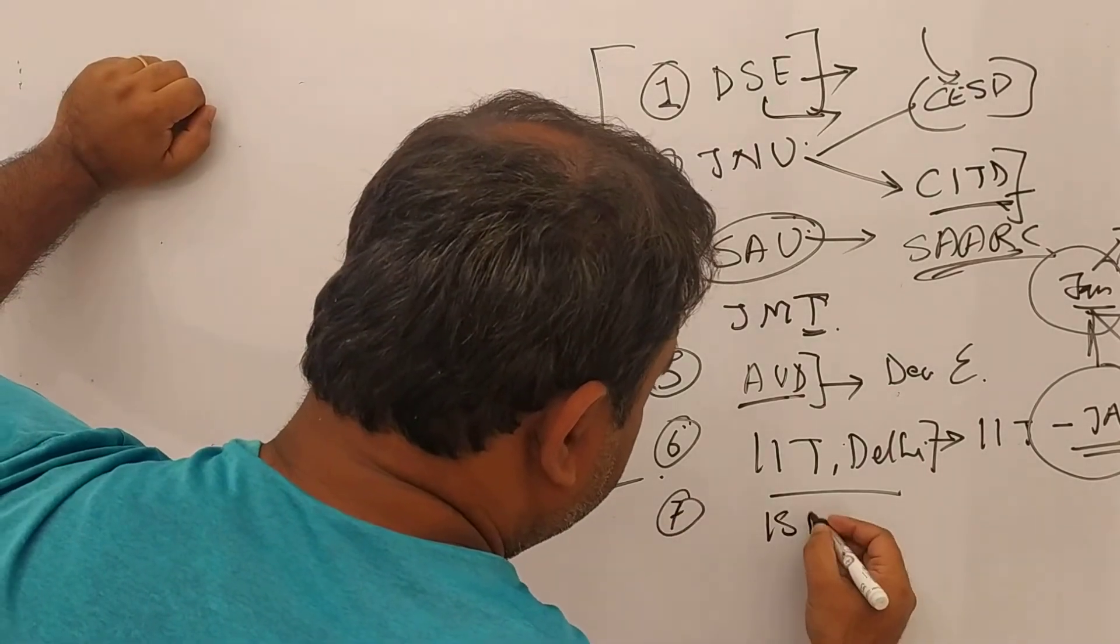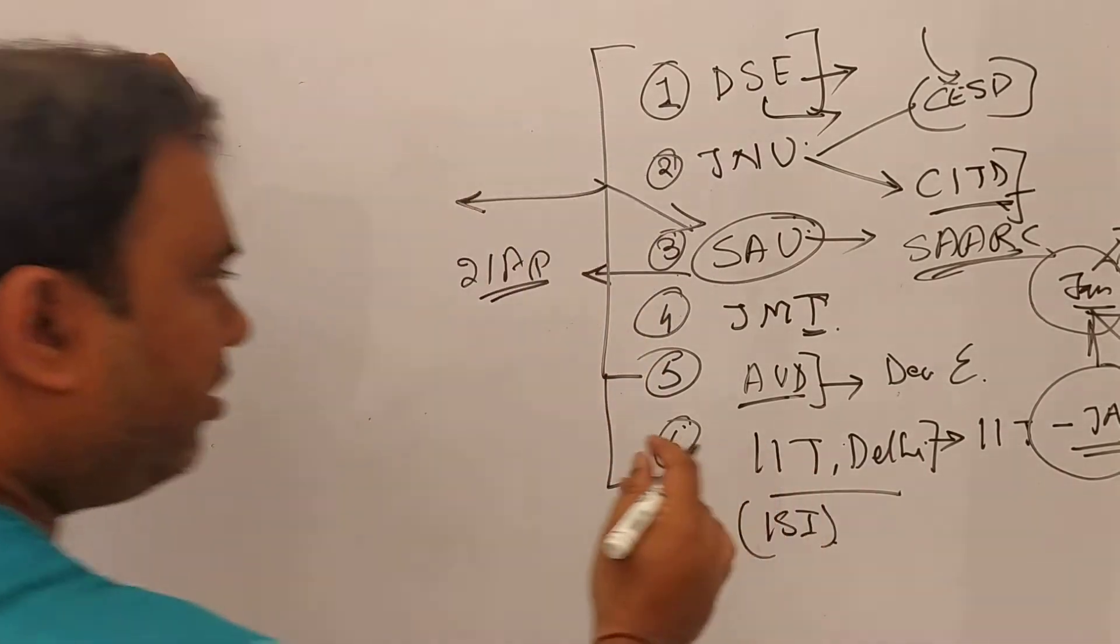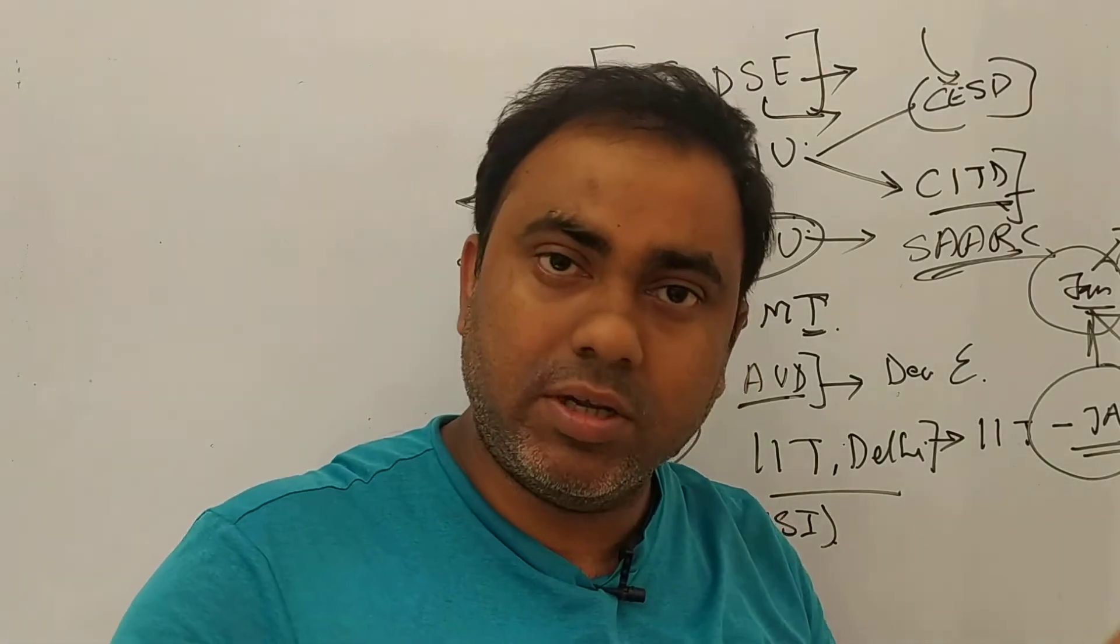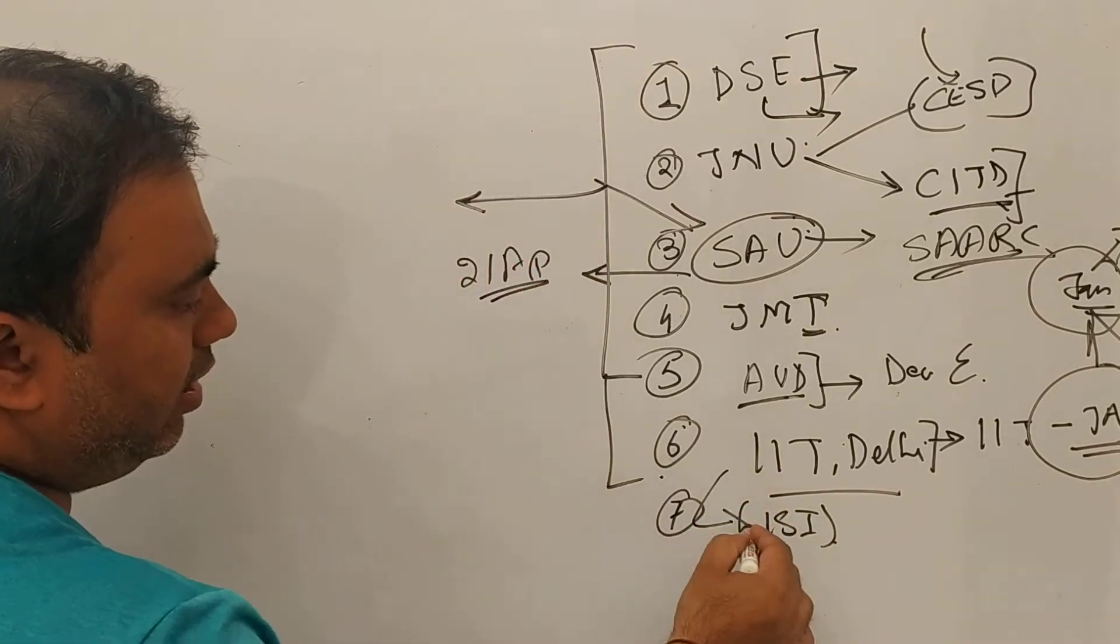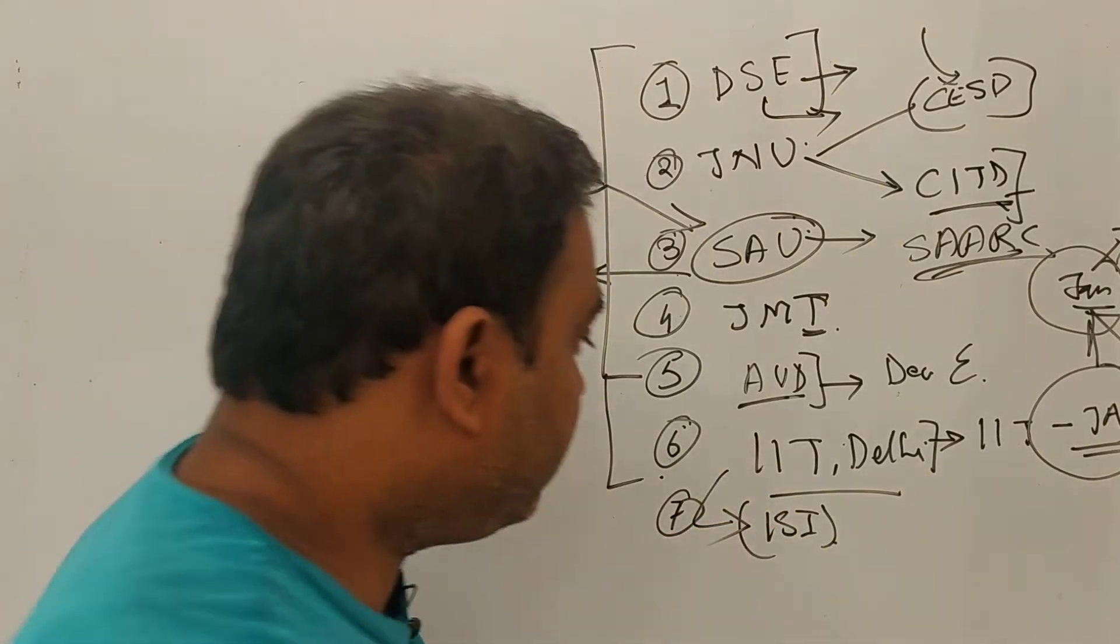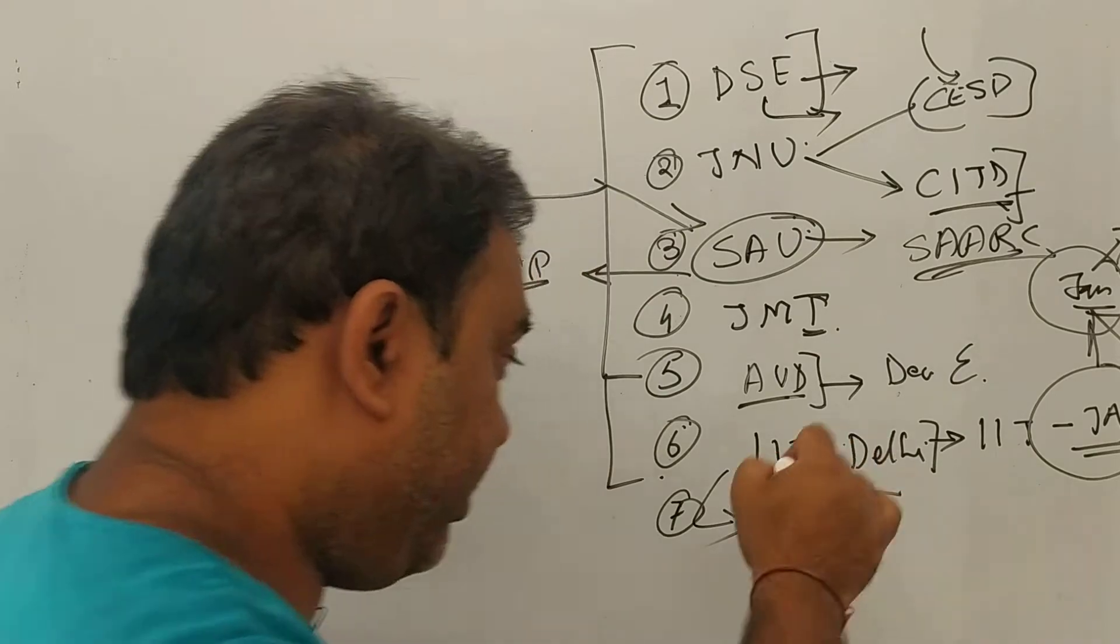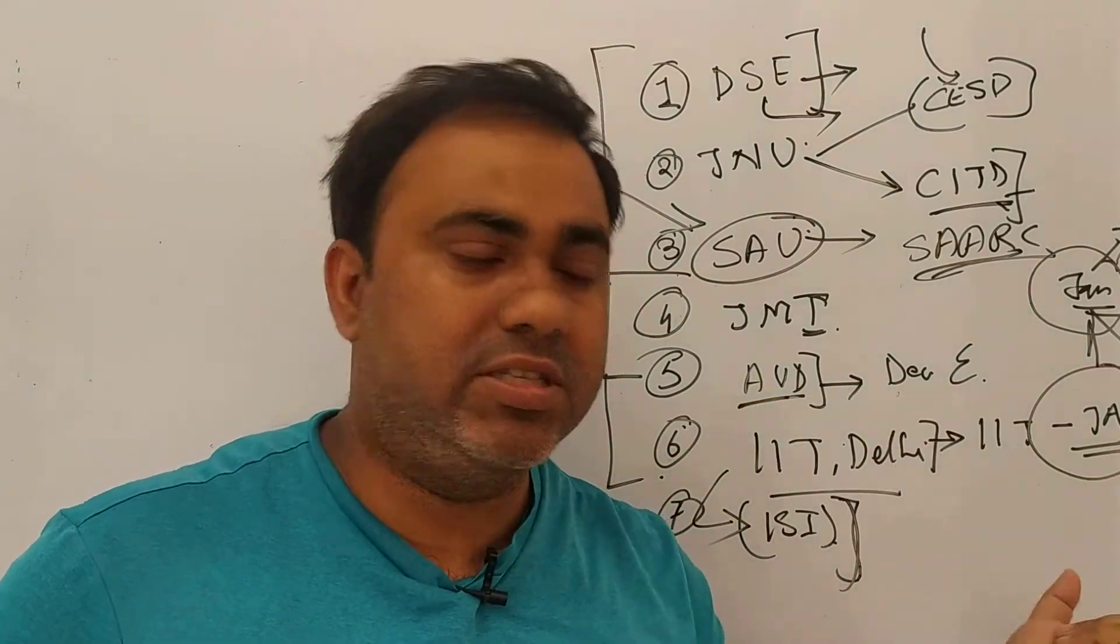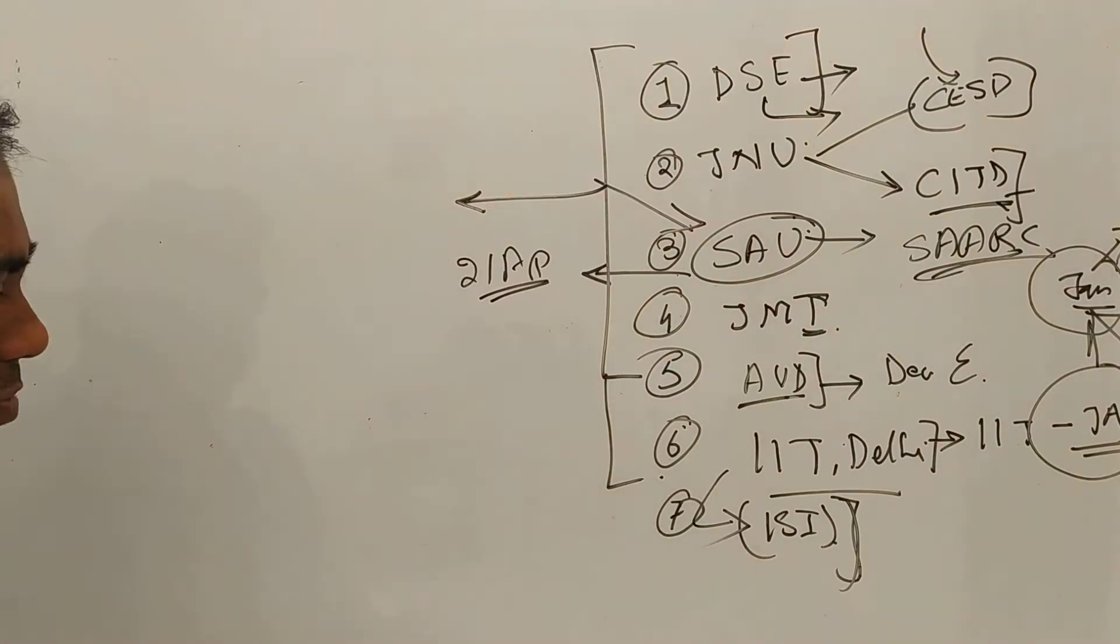Next is ISI. ISI is something that if you are very much focused or specific to mathematics or statistics, then only you should apply for ISI. And this is the only institution based in Delhi where you will have to appear for your interview or waiver for your master's entrance examination.